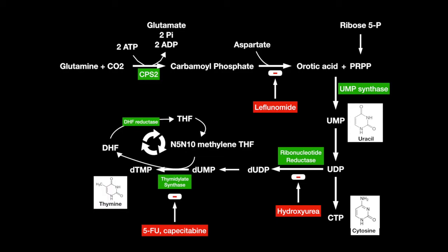The final drug class inhibits dihydrofolate reductase, rendering DHF recycling to N5-N10-methylene-THF reduced. The drugs that do this are MTX, TMP, and pyrimethamine. MTX inhibits human DHF reductase. TMP inhibits bacterial DHF reductase. And pyrimethamine inhibits protozoan DHF reductase.